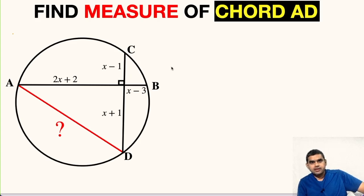Welcome to my YouTube channel. Today I am back with another interesting question. As you can see in the figure, we have a circle and we have two chords intersecting each other at 90 degrees shown here.